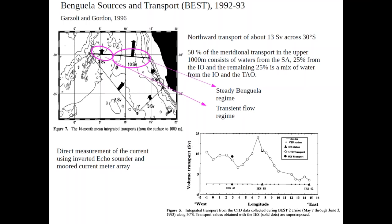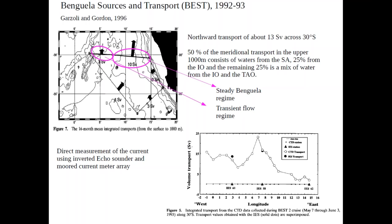They also identified two important regions at 30 south: a steady Benguela region with a steady northward flow, and a more transient region in the western part characterized by transient flow. Based on different stations, they estimated the transport as a function of longitude, and at 30 south the value is around 13 Sverdrup. Complementing this study, there was another study using RAFOS floats by Richardson and Garzoli, as part of the Cape of Good Hope Experiment (KAPEX).